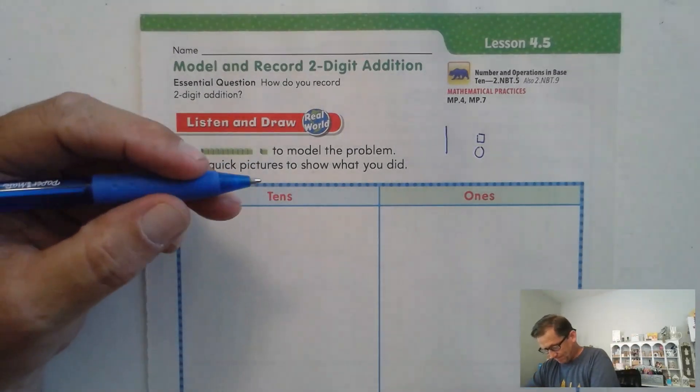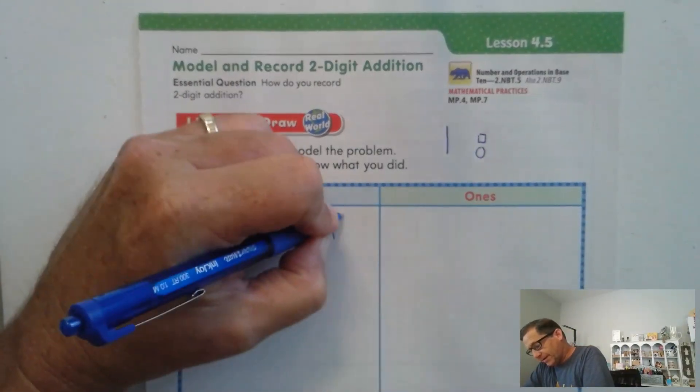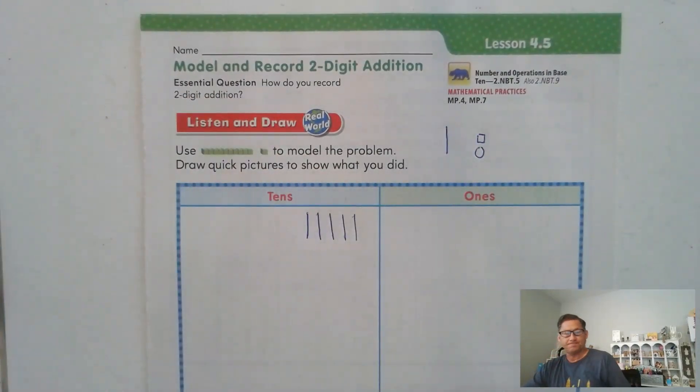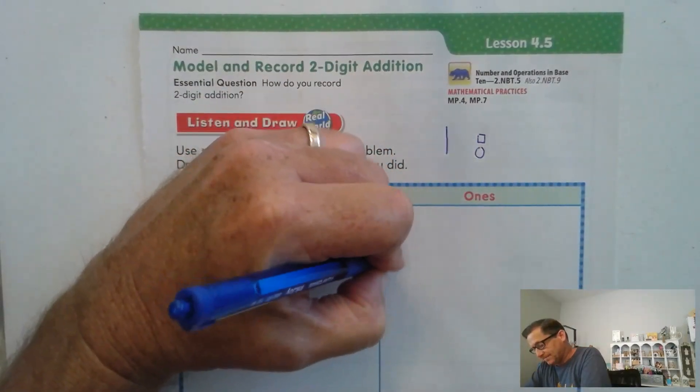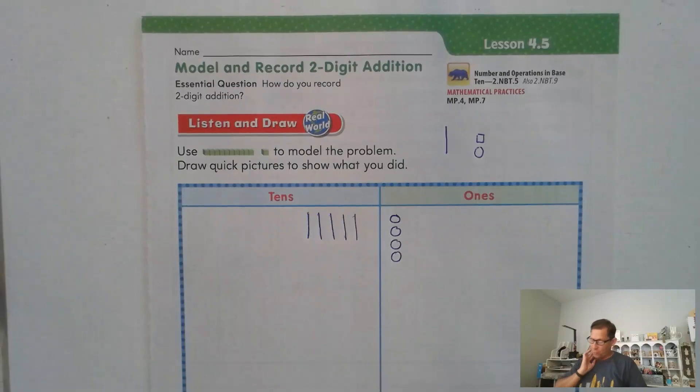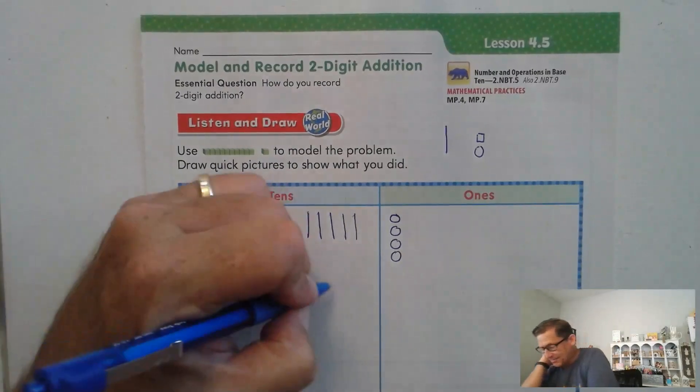All right, is this what you came up with? 54. One, two, three, four, five tens and four ones. So that's 54. And Ms. Bright's class had 35.